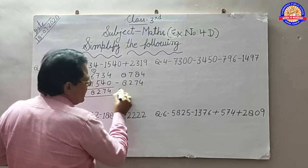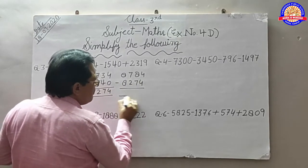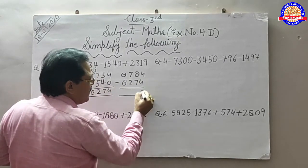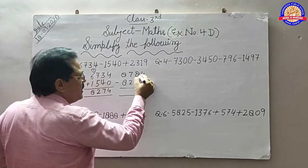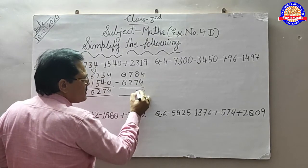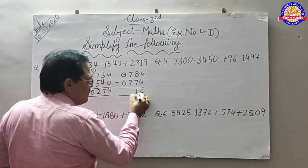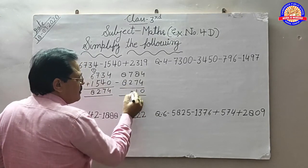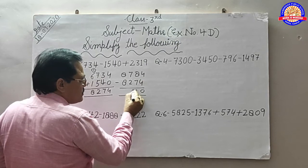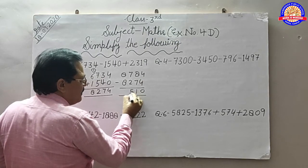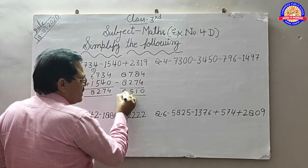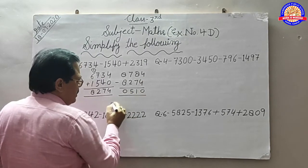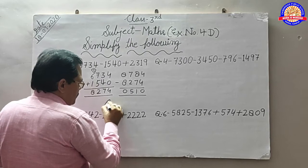और यह minus करेंगे: 4 minus 4 equals 0. 8 minus 7 equals 1. 7 minus 2 equals 5. 8 minus 8 equals 0.